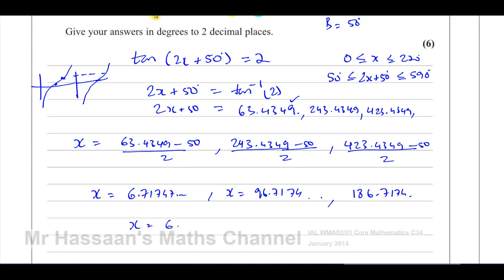So our final answers are x equals 6 point. Now be careful. It says very carefully give your answers to 2 decimal places. We normally would write 1 decimal place, but because this is otherwise stated, we're going to put 6.72, 96.72.